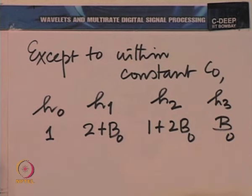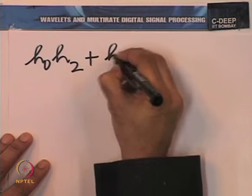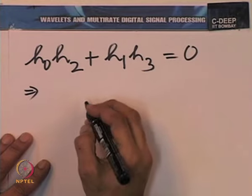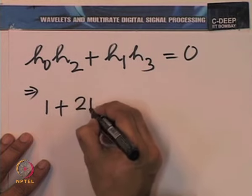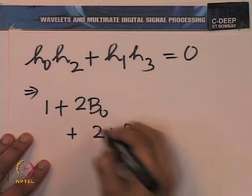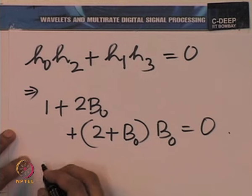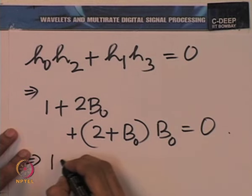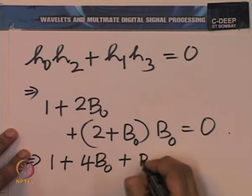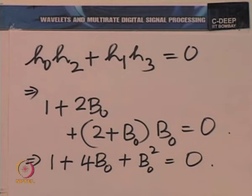Now we write down the orthogonality equation. It says h₀·h₂ + h₁·h₃ = 0, implying 1·(1 + 2b₀) + (2 + b₀)·b₀ = 0, which gives 1 + 4b₀ + b₀² = 0. So we have a quadratic equation for b₀. Not surprisingly, there was one free parameter and one non-trivial constraint.